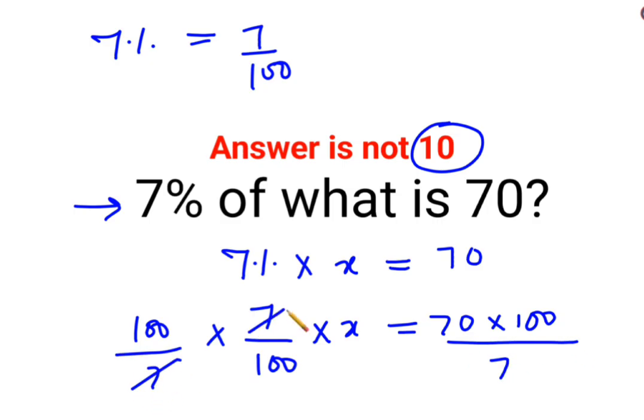So this and this gets cancelled, this and this gets cancelled. This is 7, ones are 7 and 10s are 10. So we are left with x equals 10 multiplied by 100.